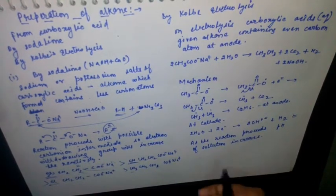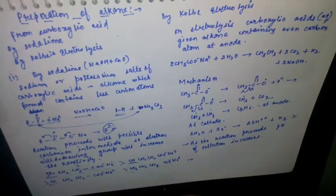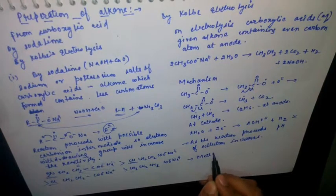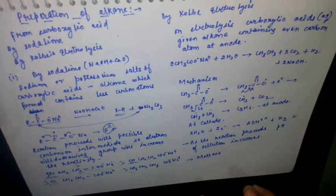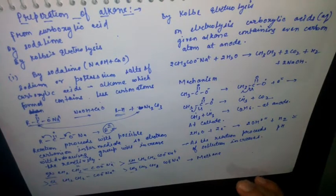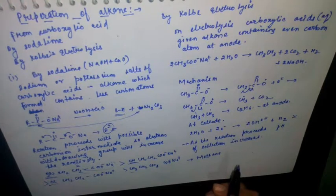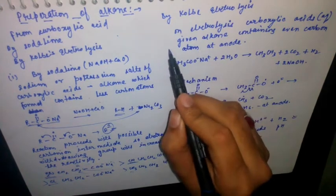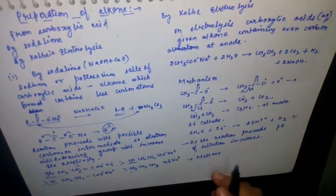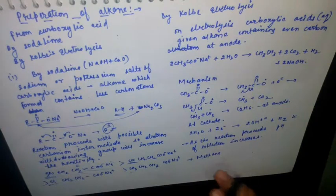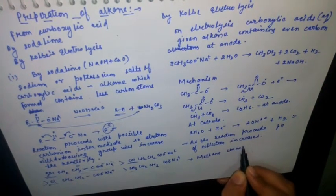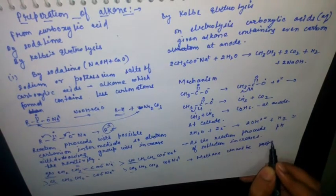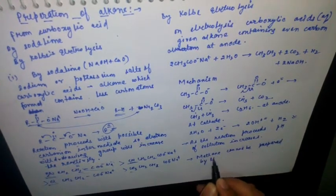As the reaction proceeds, the pH of the solution increases — this is an important point about Kolbe electrolysis. Also note that methane cannot be prepared by this method, since only even-carbon-atom alkanes are formed at the anode.